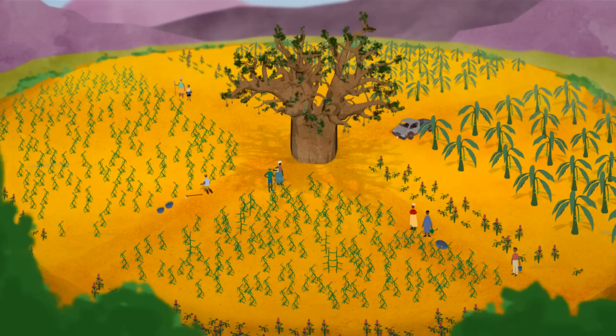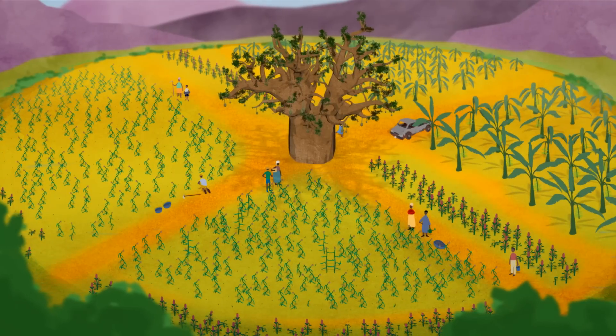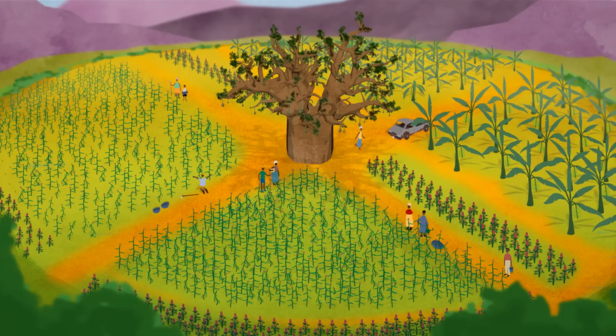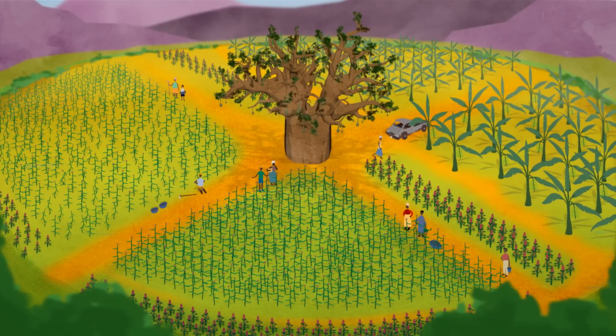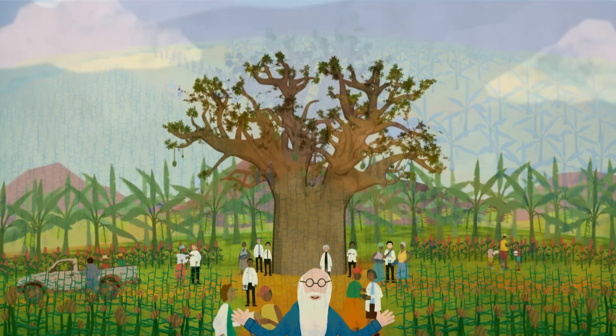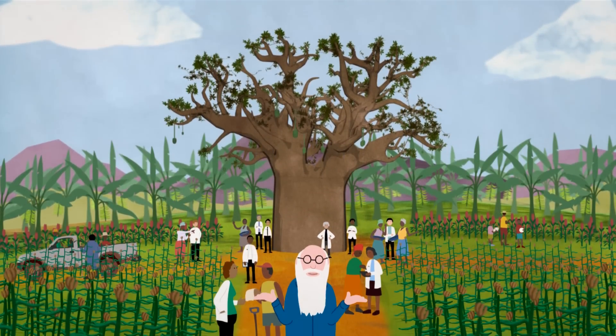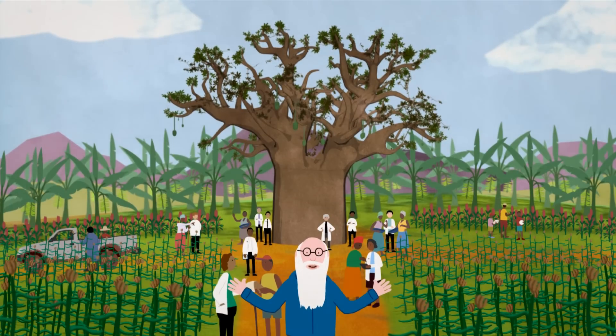The genomes will guide African plant breeders so they can create crops that are higher yielding, water and nutrient use efficient, resilient to climate change, and full of nutrition. Triggering a huge leap forward for the diversity and sustainability of the continent's agriculture.